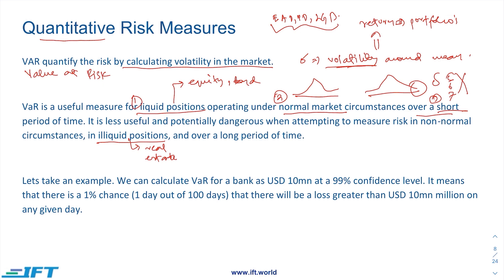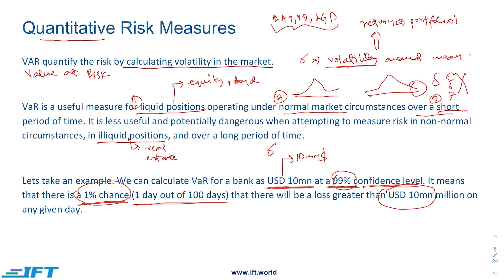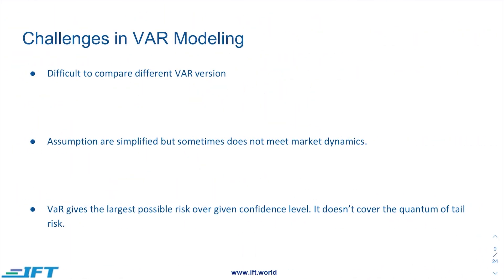To explain Value at Risk with a simple example: we can calculate VaR for a bank as USD 10 million at a 99 percent confidence level. This means, based on the model implemented and volatility calculated, the VaR is ten million dollars. There is only a one percent chance — one out of a hundred days — that the loss would be greater than USD 10 million. For the other 99 days, the overall loss would remain less than ten million dollars. You know the maximum loss you can have, and you then use it for risk management strategies.